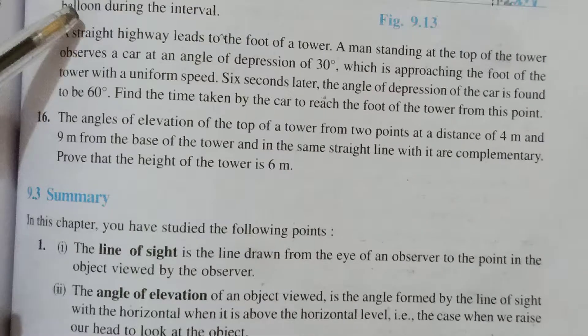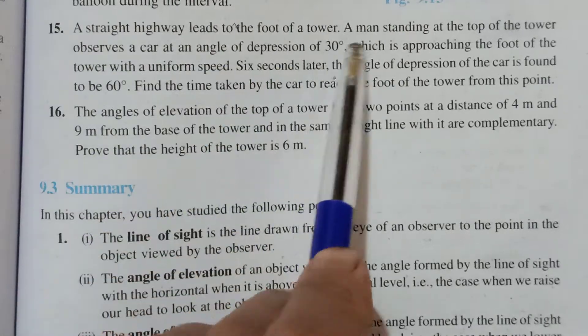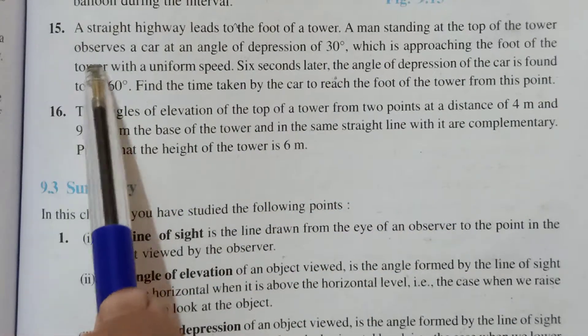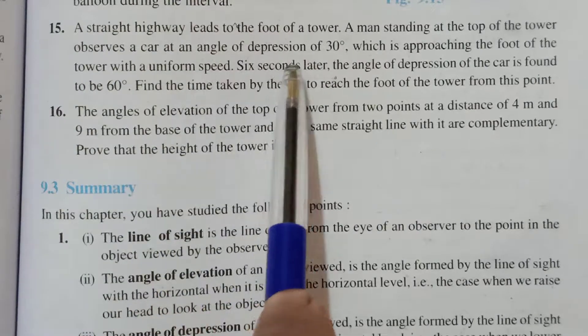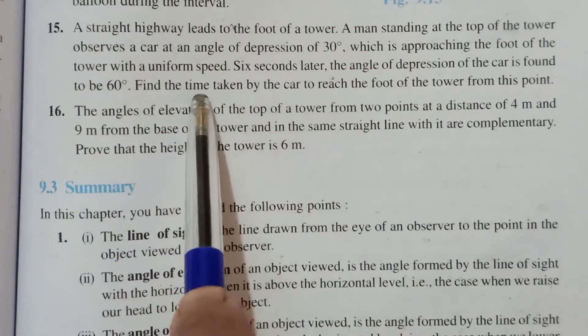Okay children, now the 15th one. A straight highway leads to the foot of a tower. A man standing on top of the tower observes a car at an angle of depression of 30 degrees which is approaching the foot of the tower with a uniform speed.